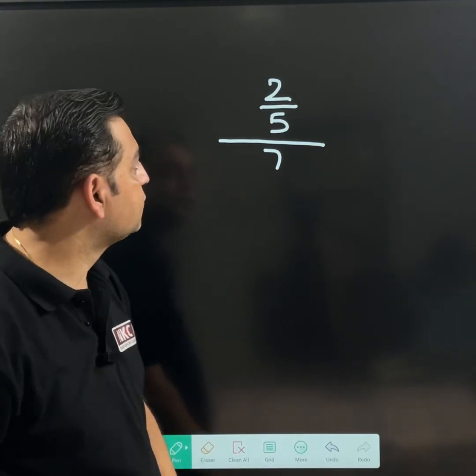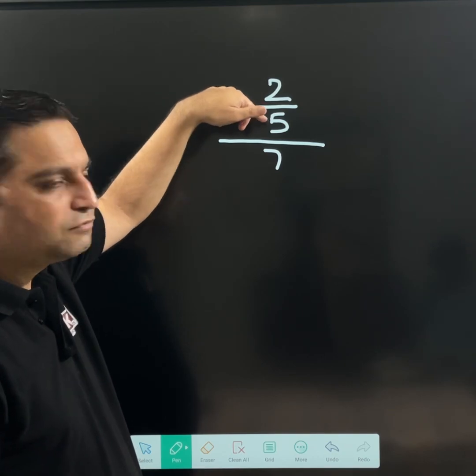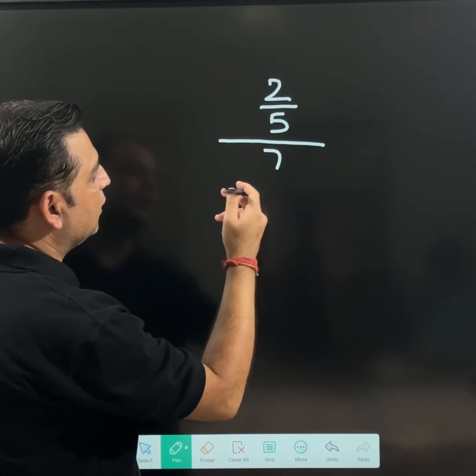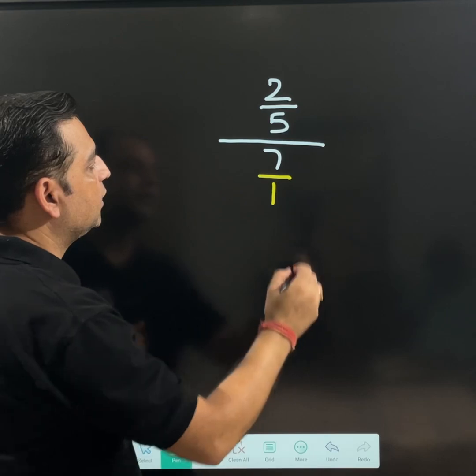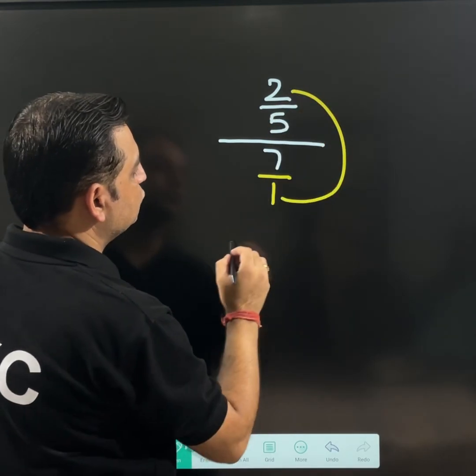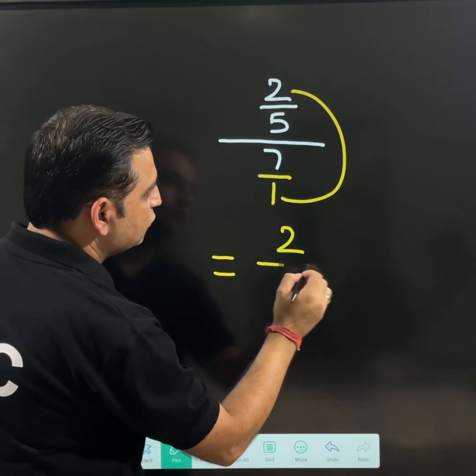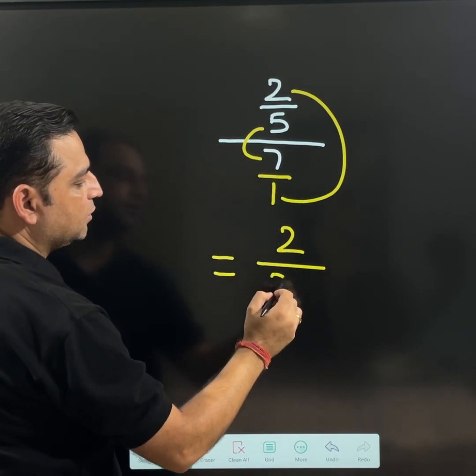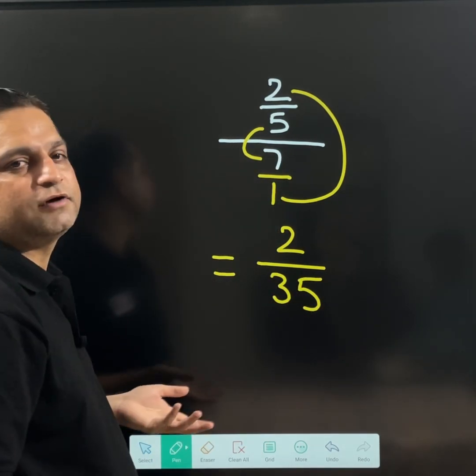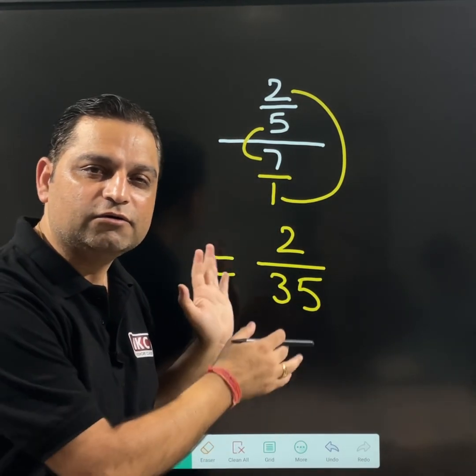Let us see what answer you get. I am also doing it. 2 over 5 divided by 7 means I am going to write it as 7 over 1. And then this 1 is multiplied with 2. I will get 2 as numerator. 5 and 7 are multiplied, 2 over 35. You can compare your answer whether you have got the same or not.